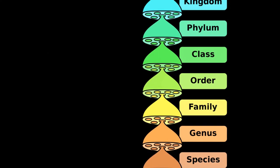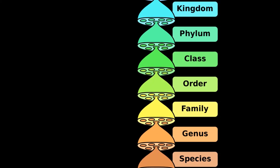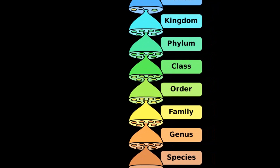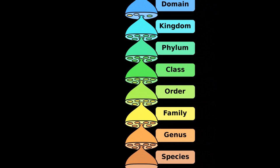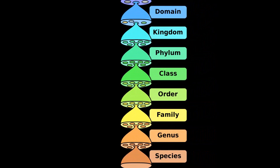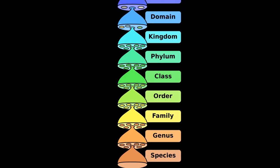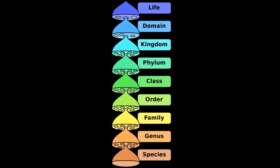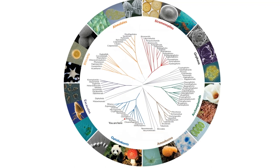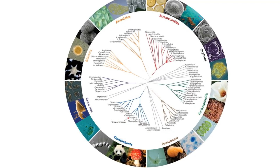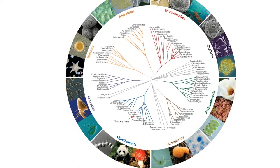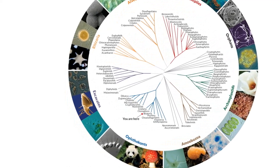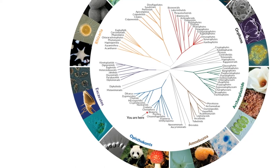Hemimastigotes represent one of a handful of Rumsfeldian known-unknown protist lineages — moderately well-described groups whose positions on the tree of life are not precisely known because they are difficult to culture in a lab and sequence. Protistologists have used peculiarities of hemimastigote structure to infer their close relatives, but their guesses were shotgunned all over the phylogeny. Without molecular data, lineages like hemimastigotes remain orphans of unknown ancestry.